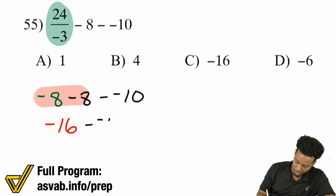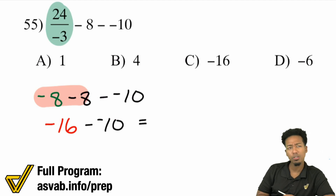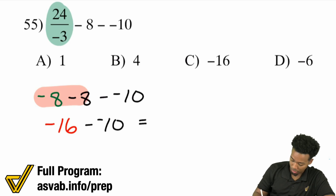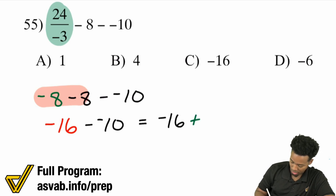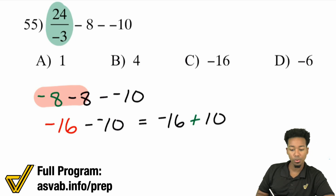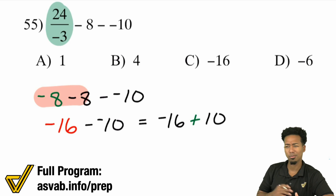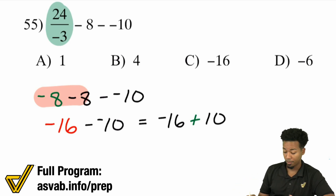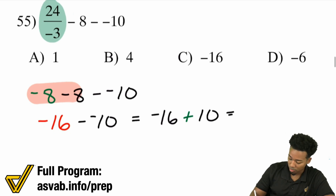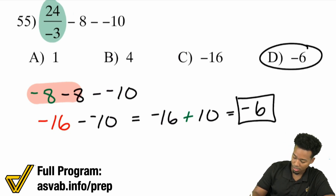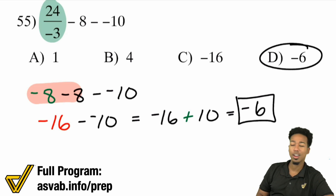Negative 16 minus negative 10. When you're subtracting a negative, that's the same thing as adding. So that becomes negative 16 plus 10. Subtract the numbers and keep the sign of the bigger number — the bigger number is 16, so the answer is negative, and 16 minus 10 is 6. Negative 6 — that's choice D.